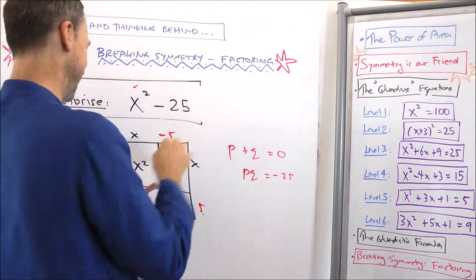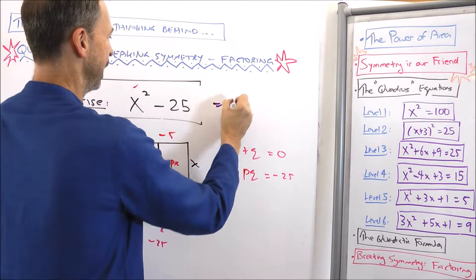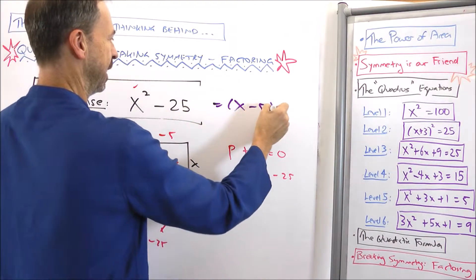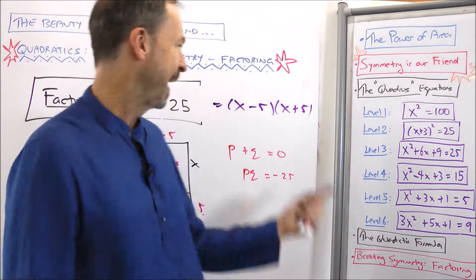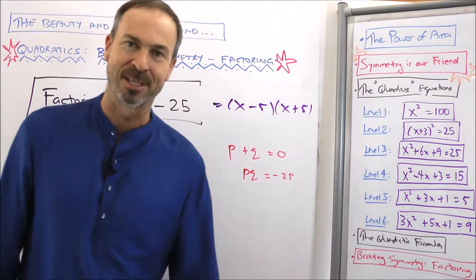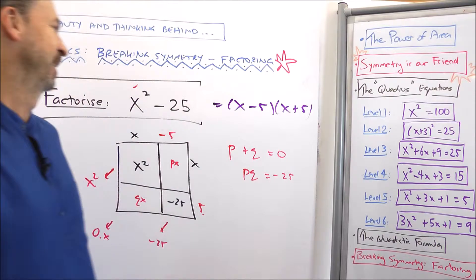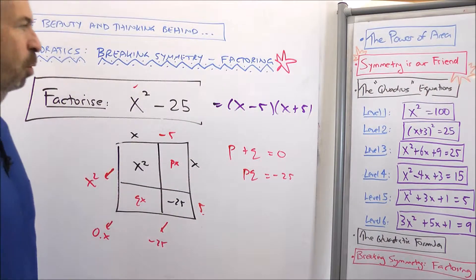This is looking really good. So I'd get the answer equals (x - 5)(x + 5). There's an unsymmetrical rectangle that actually does represent x² - 25. Great. We have factored it. We have factorized that particular quadratic.